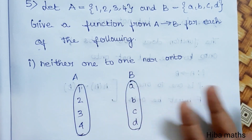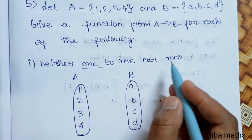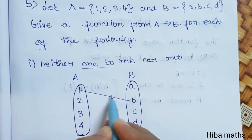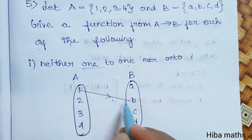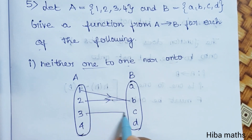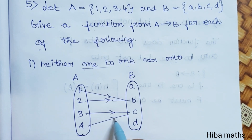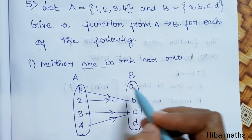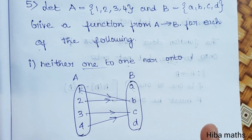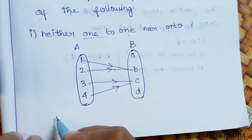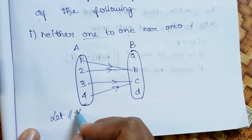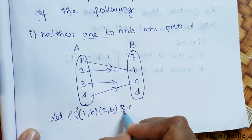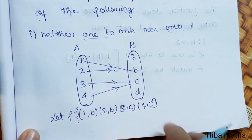First subdivision is neither one-to-one nor onto. One-to-one means each element has a different image. For example, 1 and 2 have the same image, and 3 and 4 have the same image, so the function is not one-to-one. To satisfy this, let f = {(1,b), (2,b), (3,c), (4,c)}.